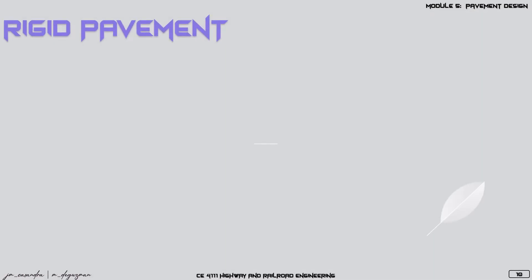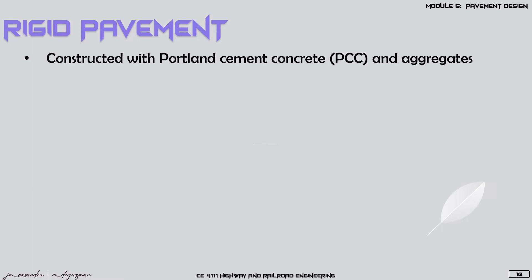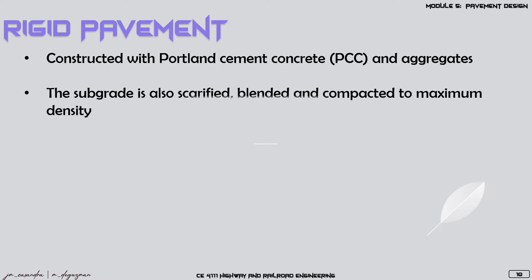Next, we have the rigid pavement, which is constructed with Portland cement concrete and aggregates. Same as with flexible pavement, the subgrade of the rigid pavement will be scarified to clear it from debris and blended for uniformity before compaction to maximum density.